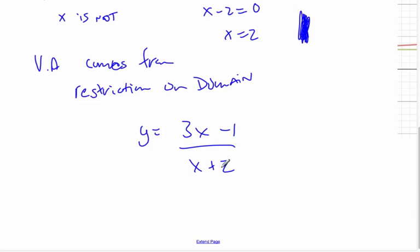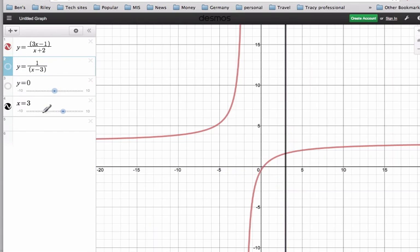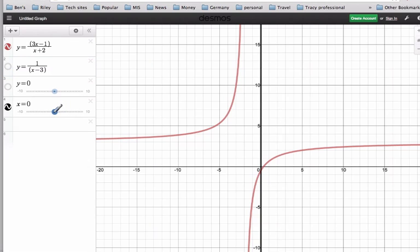Again, this value here cannot be zero, and so I make x plus 2 equals zero, so x equals minus 2 is the equation of the vertical asymptote. Look at a graph of that one—here is that equation, and you can see if I take my asymptote, it moves over here to minus 2. And there is my vertical asymptote.